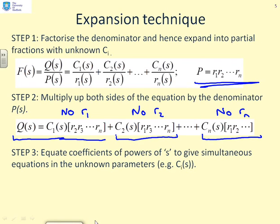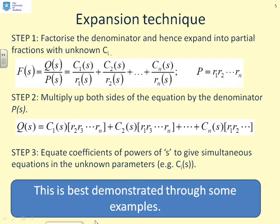Hopefully that's obvious because when you multiply up, P has got all the r's, and therefore if you multiply C1 over r1 by all the r's, the r1 terms cancel. Now finally we get to step three, which simply says equate the coefficients of the powers of s on each side of the equation. So you've got Q on one side and all these other terms on the other side.